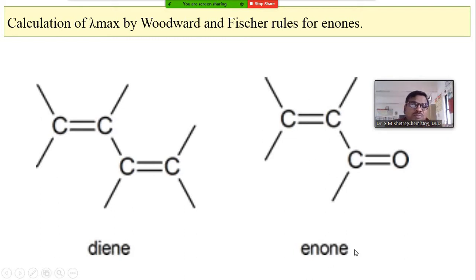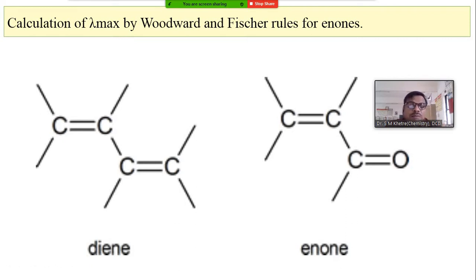Now come to the next point, which is called the enone system. 'En' indicates the presence of a double bond, and 'O-N-E' indicates the presence of a carbonyl group. So remember the meaning of the enone system: 'en' means the presence of a carbon-carbon double bond, and 'one' means the presence of a carbon-oxygen double bond.